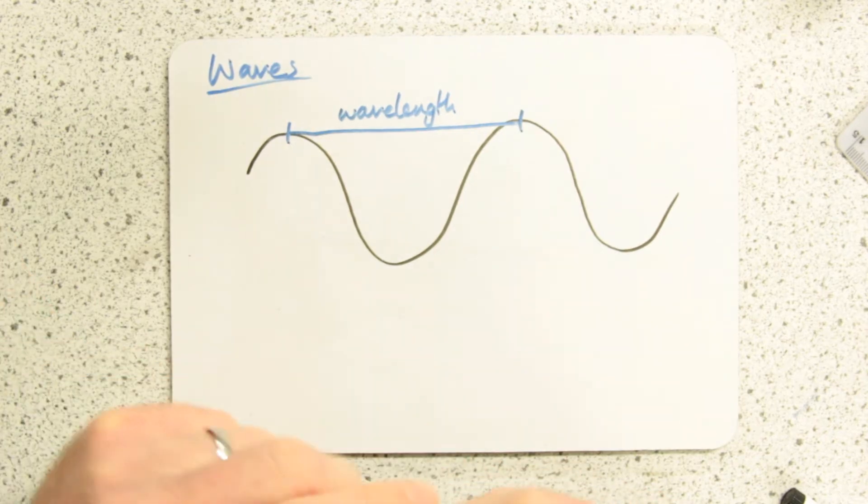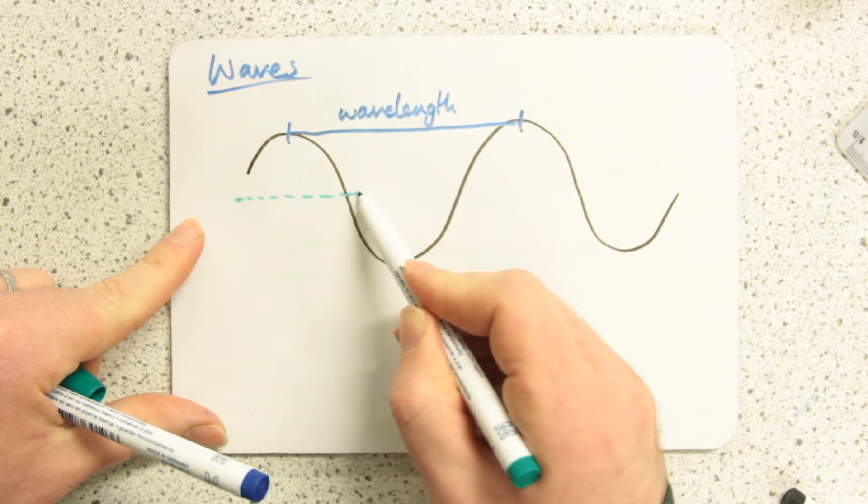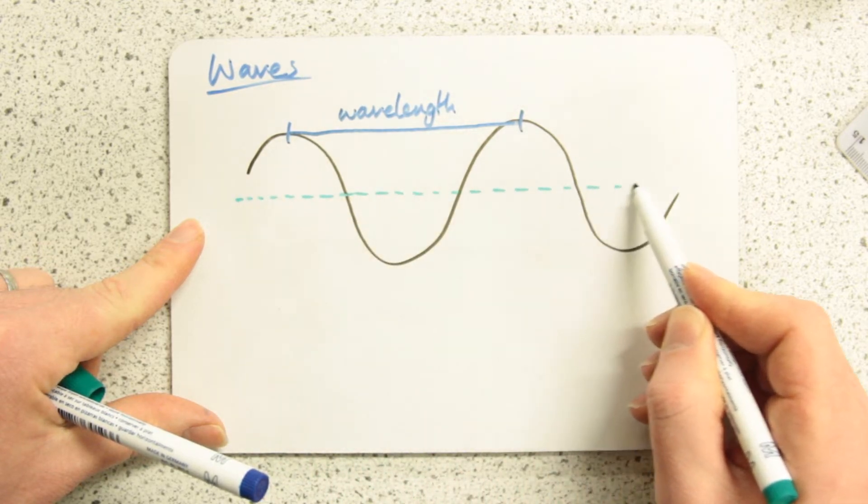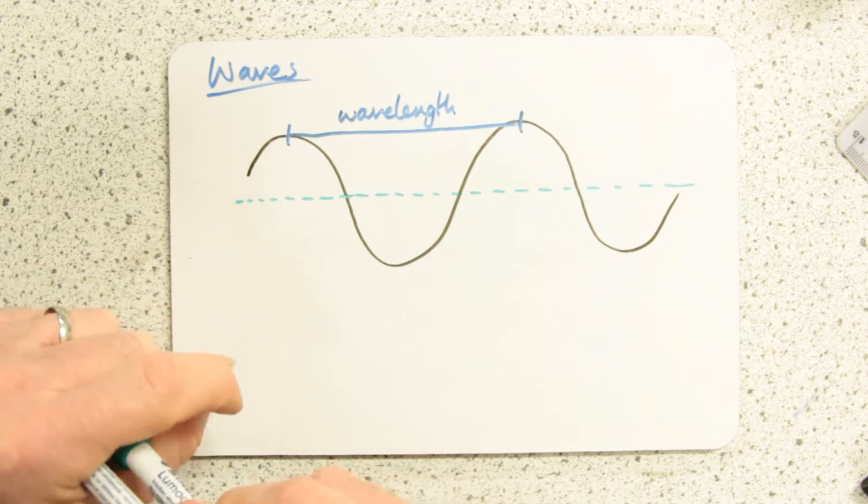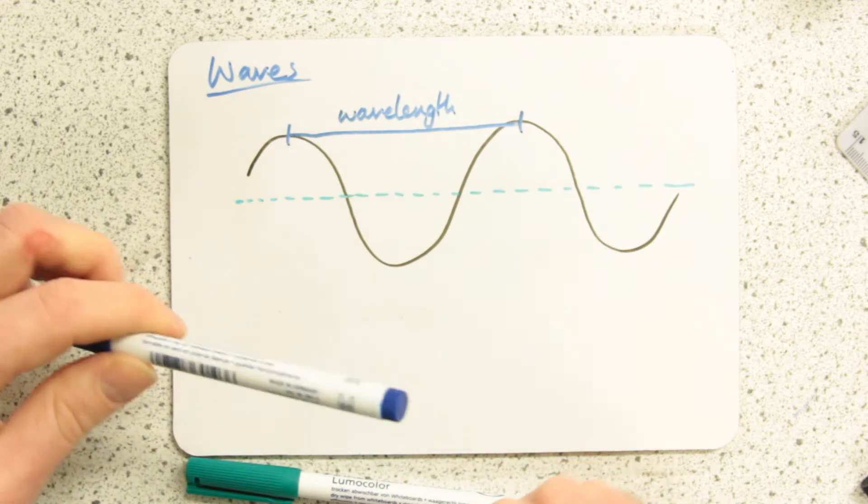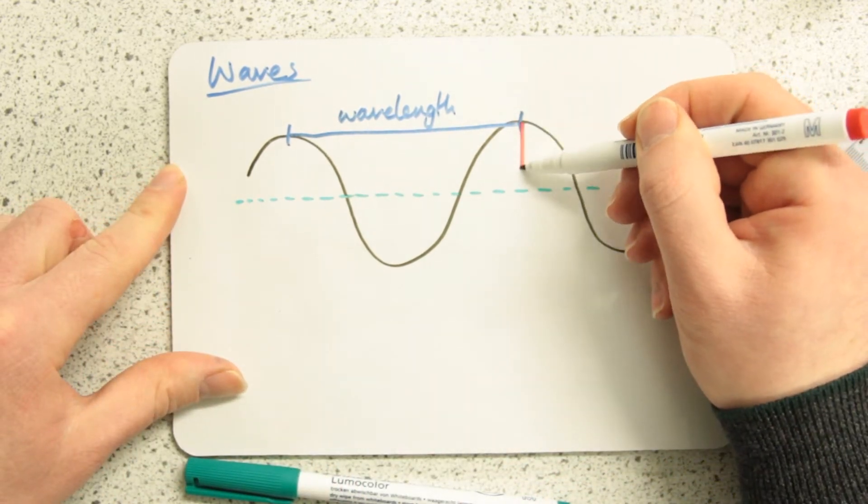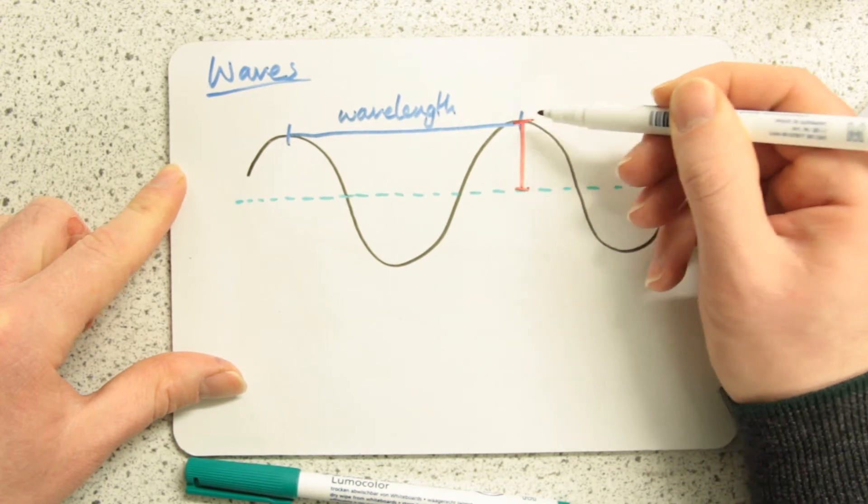Amplitude. The amplitude is a little bit harder to get your head around. Well we've got to imagine an undisturbed position, call that the equilibrium position or the zero position. Now we want to understand where an amplitude is. So I'll draw that in red. The amplitude is from the peak to the equilibrium position.